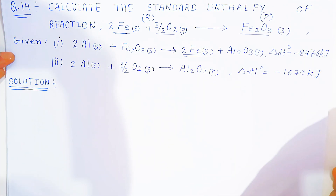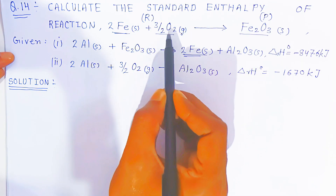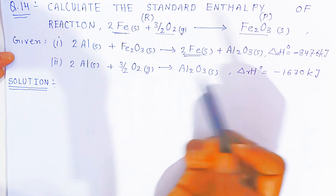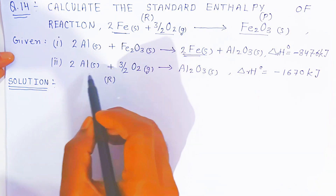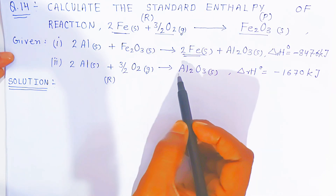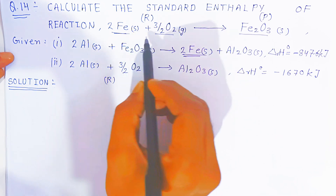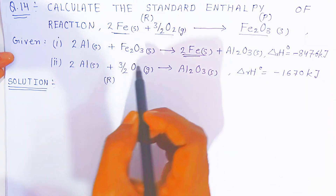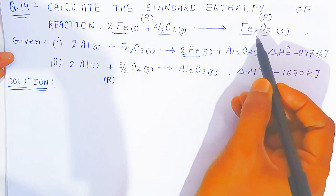So what you have to do: reverse equation 1, then add chemical equation 2 as it is. By observing the reactant and product, accordingly you reverse the reaction, write it down, and after addition you will get your main reaction. With the help of this, we are going to find the standard enthalpy of the main reaction.